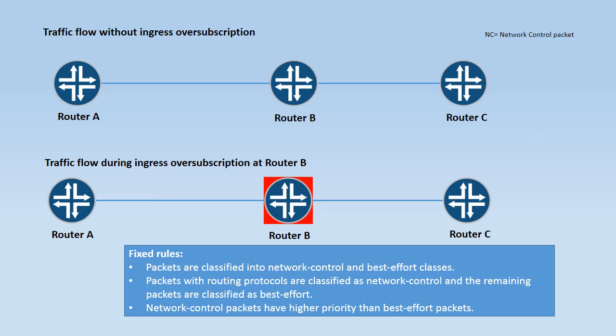Fixed rules are useful when you want the higher priority network control traffic to be forwarded. However, the limitation of these fixed rules is that even if you want the trusted transit packets marked by router A to be forwarded by router B, router B might still drop these packets.